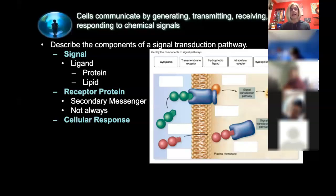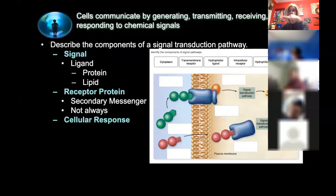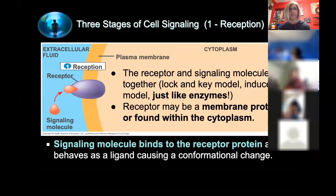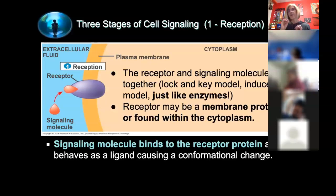Signals that bind and cause a response are called ligands. A protein ligand would bind a surface receptor protein, while a lipid ligand could travel through the membrane and bind inside the cell. A polar molecule like an ion could also cause an ion channel to open — as with sodium channels and acetylcholine.